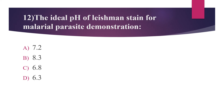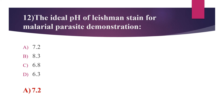Twelfth question: the ideal pH of Leishman's stain for malarial parasite demonstration. Option A: 7.2. Option B: 8.3. Option C: 6.8. Option D: 6.3. The answer is option A, 7.2. Leishman's stain must be diluted for use with phosphate buffer. pH 6.8 is preferred when the morphology of blood cells is to be examined. pH 7.2 is used for parasitic studies. Therefore pH 7.2 is the correct answer.